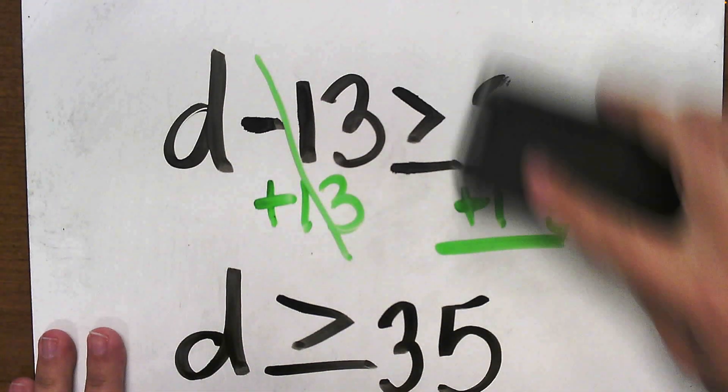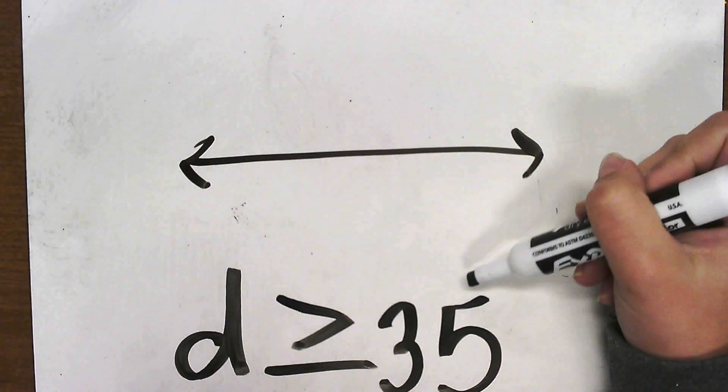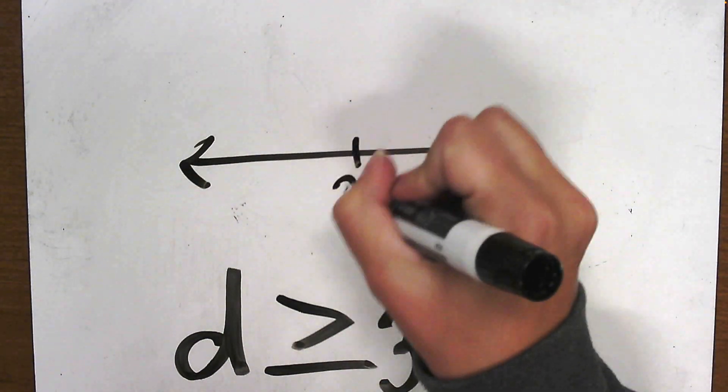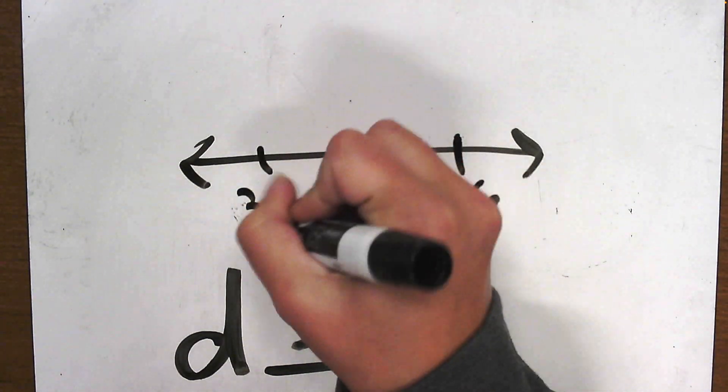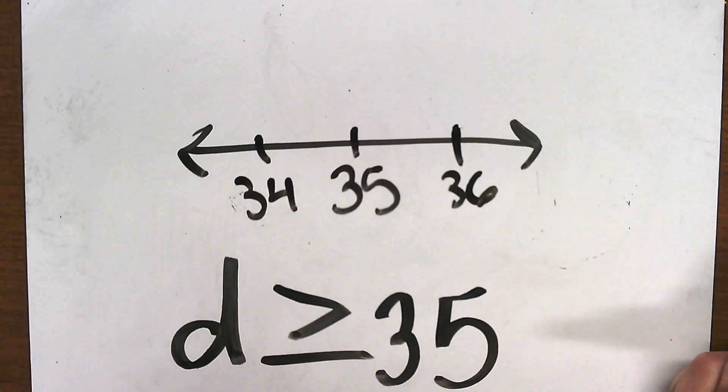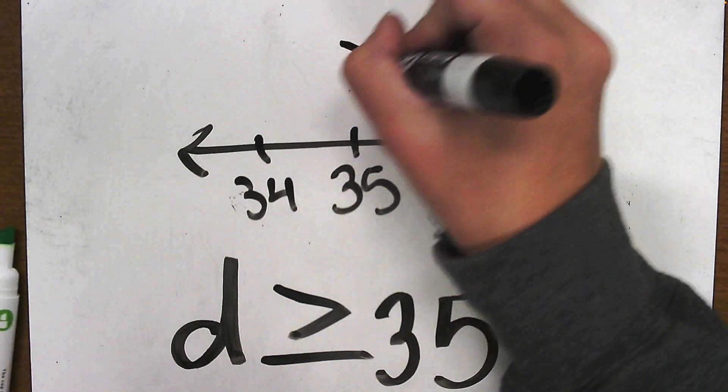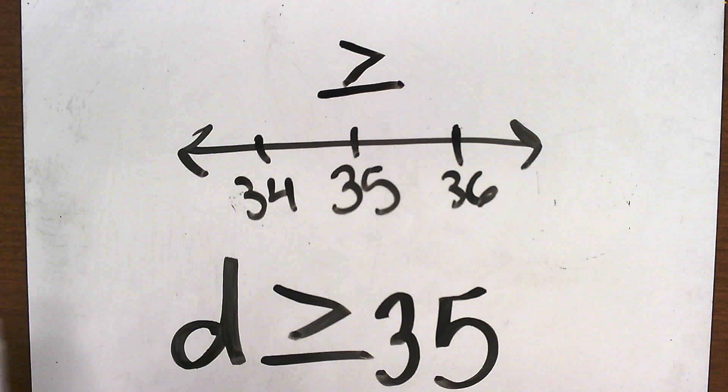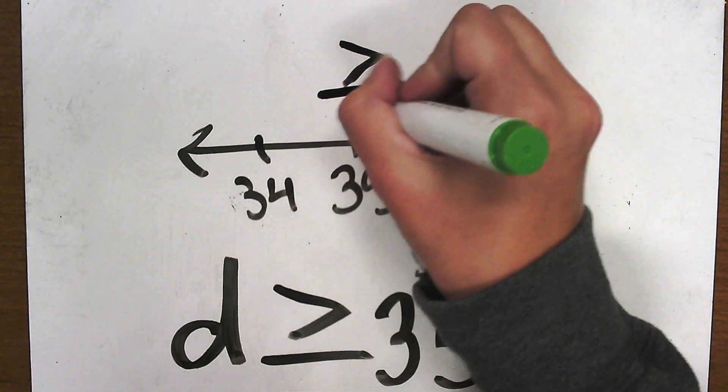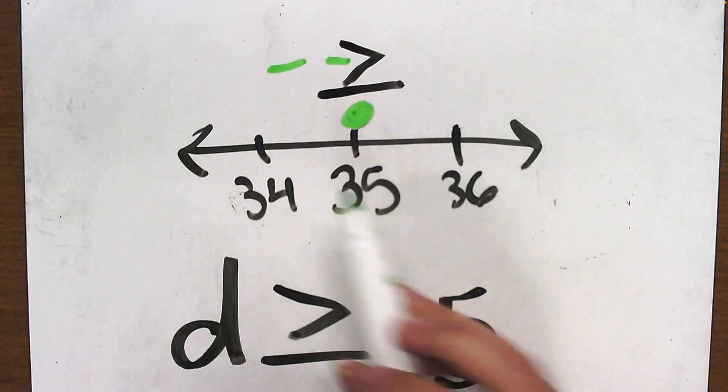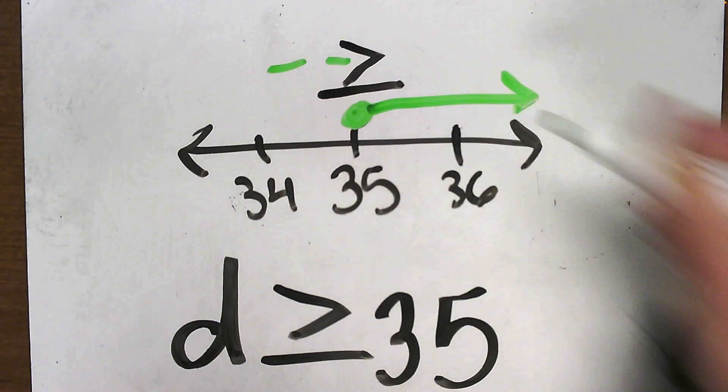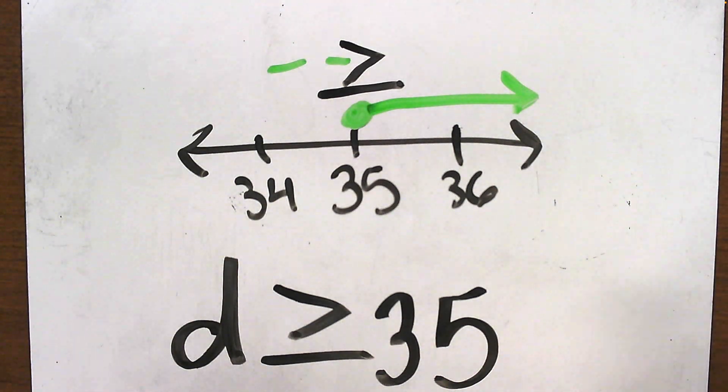To graph that, I have my continuous line. My number here is 35, so I'm going to write that somewhere near the middle. And then I'll add a 36 on this side, 34, and again, these numbers just continue. Finger at a 35, I look at my symbol. My symbol shows that it will be pointing that way, and it is equal to, so that means my dot is going to be closed. Now, if I were to make this an arrow, the arrow would point to the higher number, so I'm going to make my arrow go this direction. There we go. We just graphed our inequality.